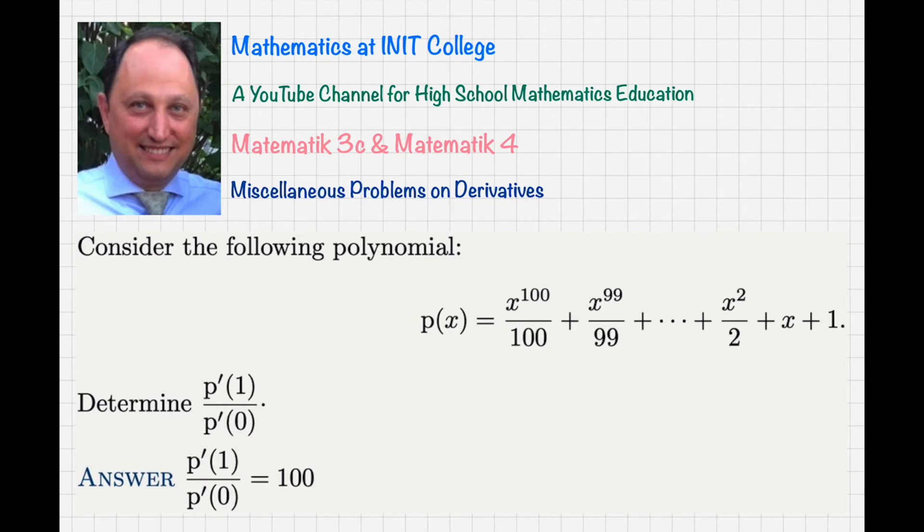Hi, this is Babak and in this video I am going to solve the following problem for you. Consider the following polynomial: p(x) equals x to the 100 divided by 100, plus x to the 99 divided by 99, plus up to x to the 2 divided by 2, plus x plus 1. Determine p prime of 1 over p prime of 0.